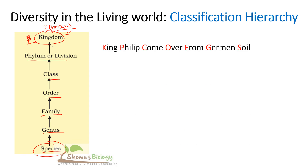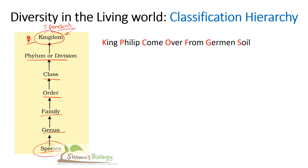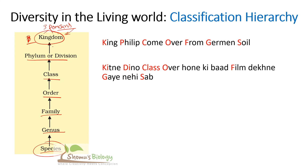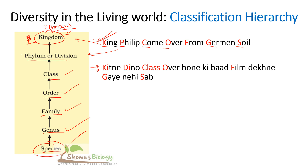The easy way to remember the classification hierarchy is: 'King Philip come over from German soil.' There are many mnemonics for this, but this is one of the best. Each first letter corresponds to a level: K for Kingdom, P for Phylum, C for Class, O for Order, F for Family, G for Genus, S for Species. If you also want to include Domain, you can say 'Dumb King Philip come over from German soil,' where D stands for Domain.